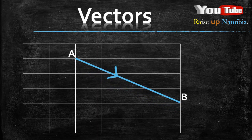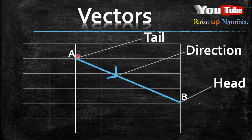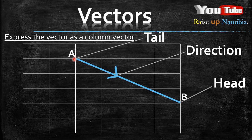A vector has what we call a tail, a direction arrow, and a head. We use the tail as our starting point. Looking at the direction arrow — it's pointing at B, meaning it's coming from A, so A will be our tail. Now what do we do when we are asked to express this vector as a column vector?